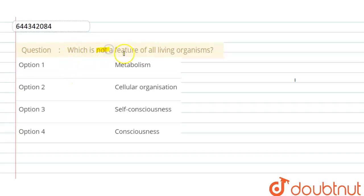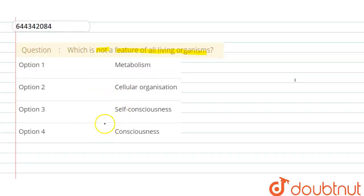Hello, here the question is: which is not a feature of all living organisms? The options are: first, metabolism; second, cellular organization; third, self-consciousness; and fourth, consciousness. Let's discuss each option one by one.